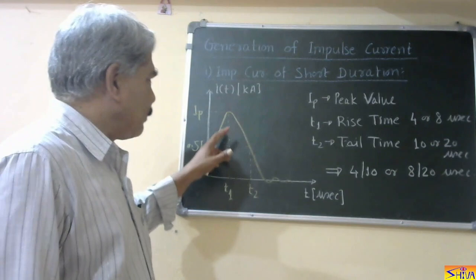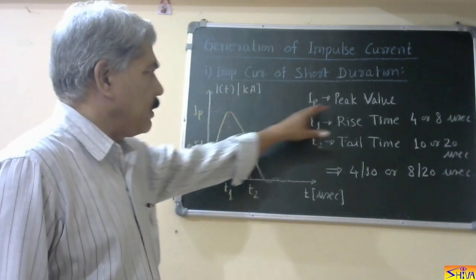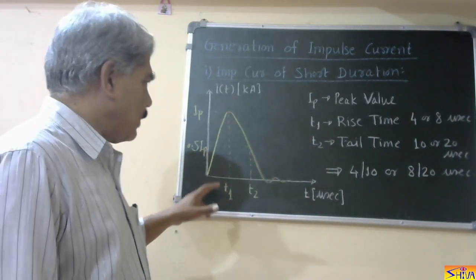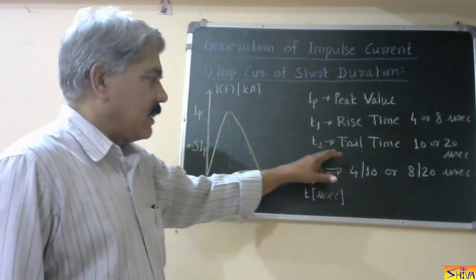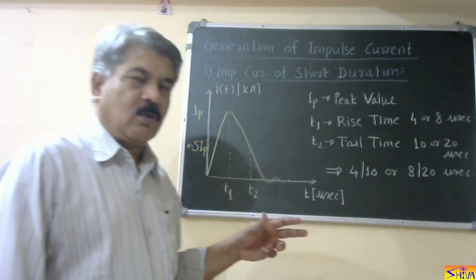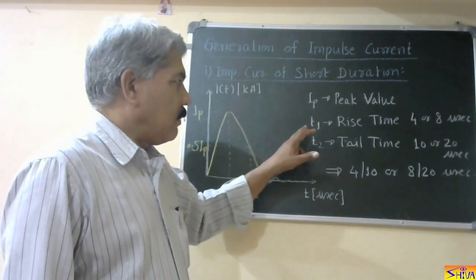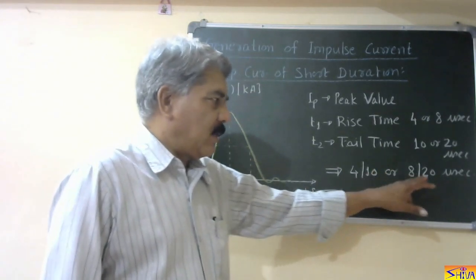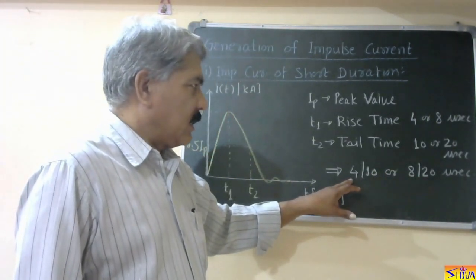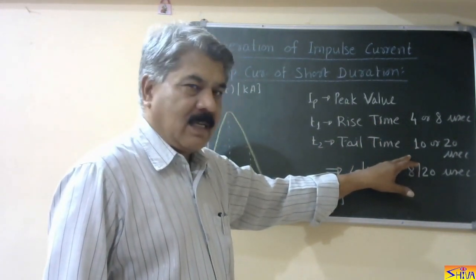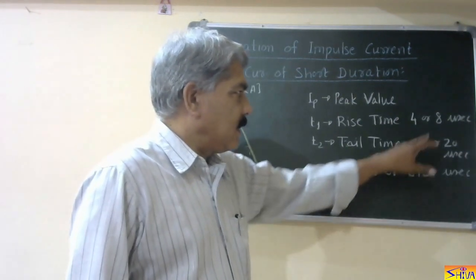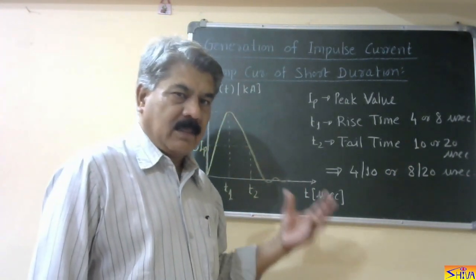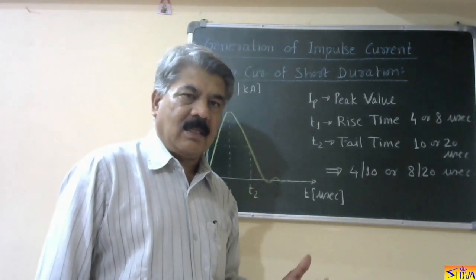We use three parameters to represent this impulse current. First is the peak value, that is the maximum value of the impulse current. Second is t1, the rise time, which is the time required to reach the peak value. Third is t2, the decay time or tail time, which is the time required by the impulse current to reduce to 50 percent of the peak value. As per Indian standard, this impulse current is either 4 by 10 microsecond or 8 by 20 microsecond duration — meaning rise time 4 µs and decay time 10 µs, or rise time 8 µs and decay time 20 µs.